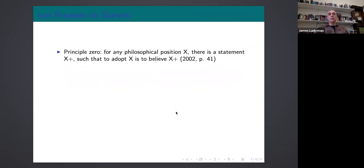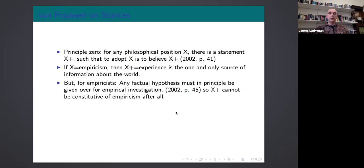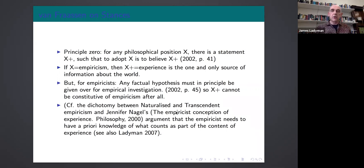Van Fraassen thinks that we have to formulate these positions as stances because the alternative is to think what people have standardly thought, that there is a statement x plus that goes with any philosophical position x such that to adopt x is to believe x plus. But the problem is this gets us into trouble with empiricism because then x plus would be experience as the one and only source of information about the world. But for empiricists any factual hypothesis must in principle be given over for empirical investigation, so x plus cannot be constitutive in empiricism after all. And see here the dichotomy between naturalized and transcendent empiricism. So the naturalized empiricist tries to vindicate empiricism naturalistically and find out what counts as experience, and transcendent empiricists must impose some kind of extra-empirical judgment of empiricism itself and of what counts as experience. This is pushed by Jennifer Nagel in an insightful paper called The Empiricist Conception of Experience, and I wrote about it in my work on Van Fraassen's epistemology.